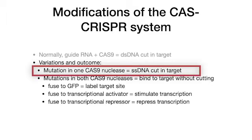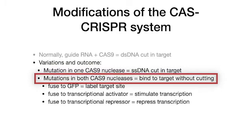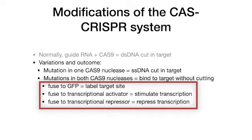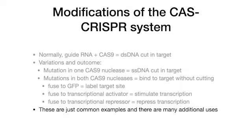A mutation in one Cas9 nuclease results in a single-stranded DNA cut. Mutations in both Cas9 nucleases cause Cas9 to bind the target without cutting. Fusion of Cas9 to GFP will label the target site. Fusion to transcriptional activators will stimulate transcription. Fusion to a transcriptional repressor will repress transcription. Keep in mind that these are just a few examples and there are many additional uses.